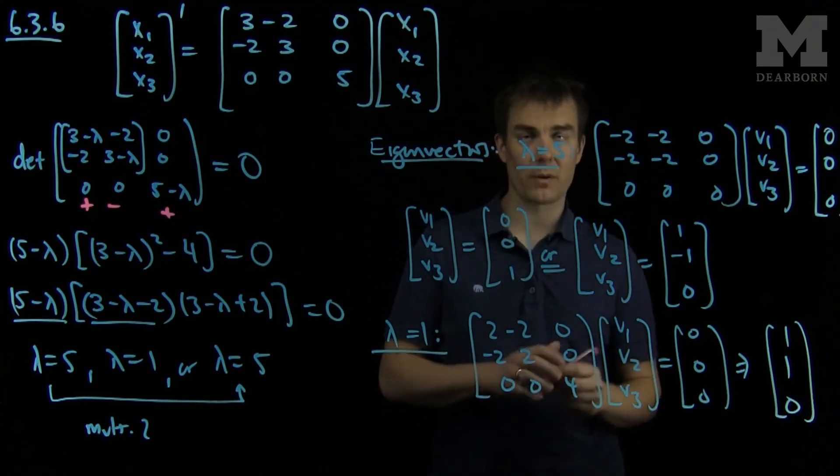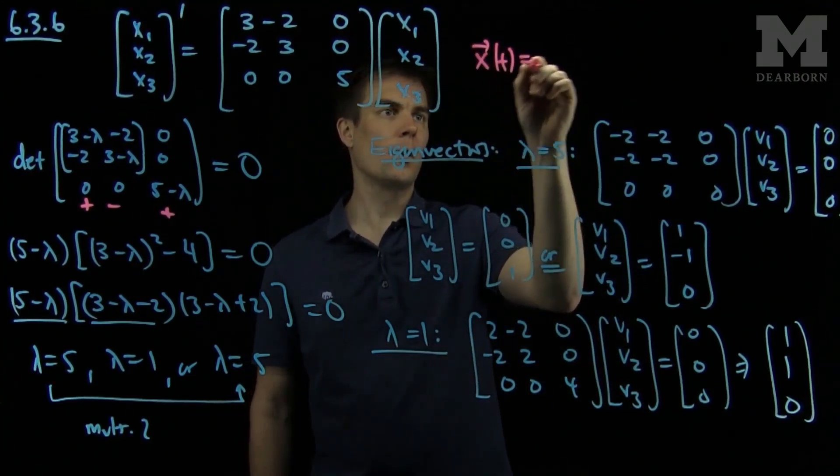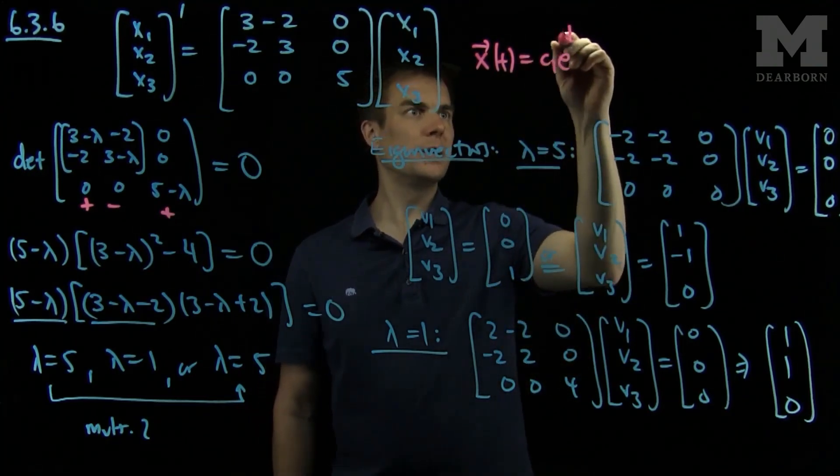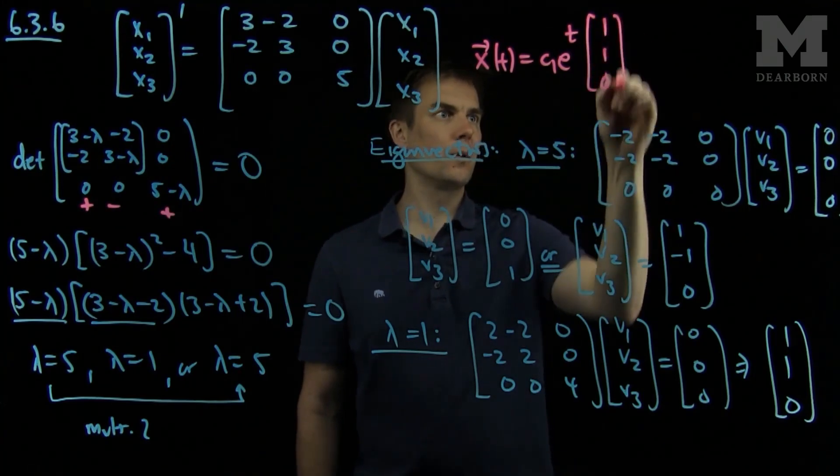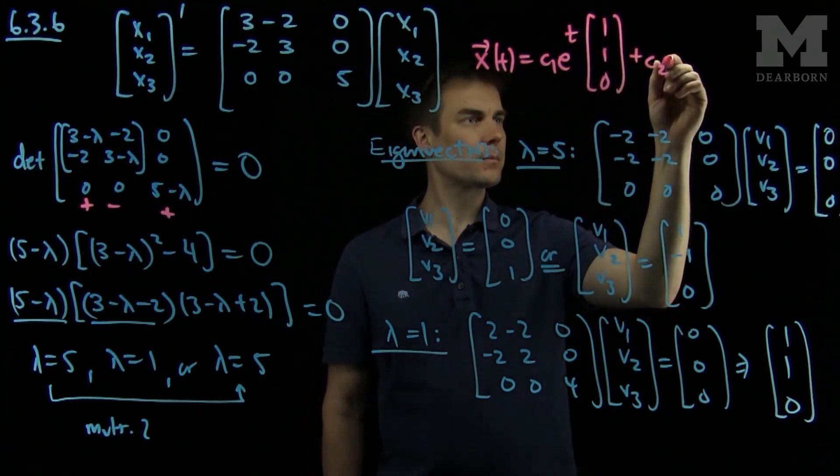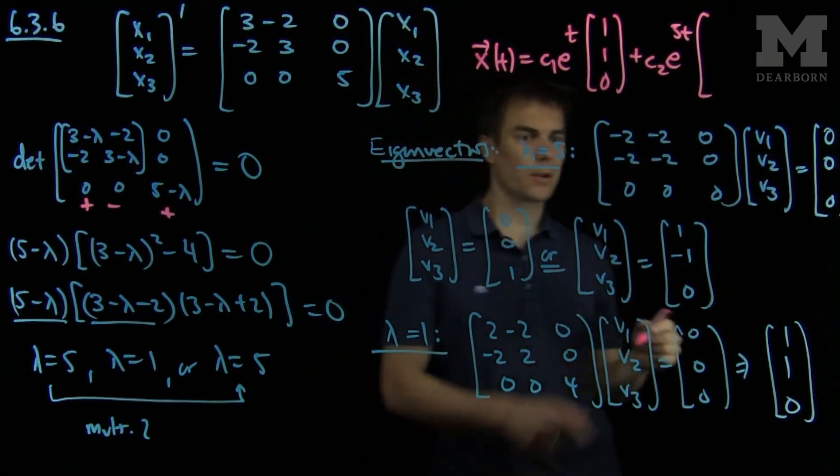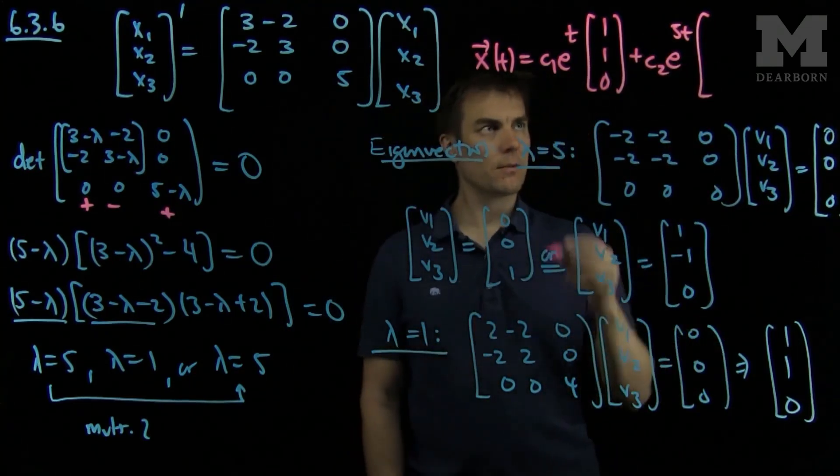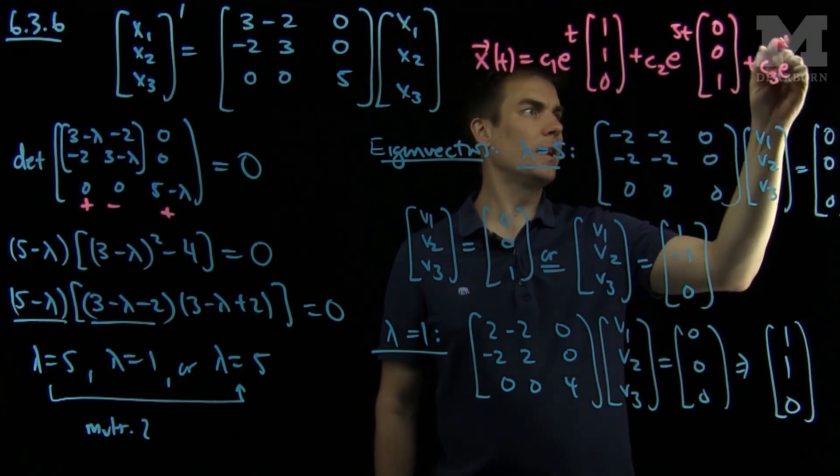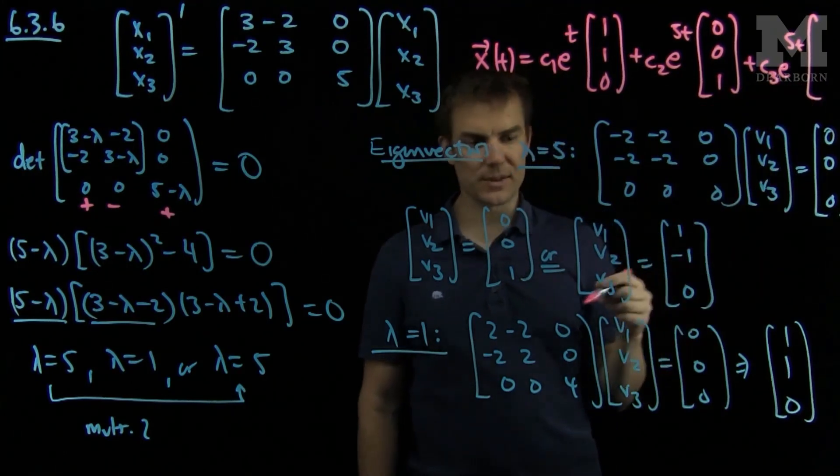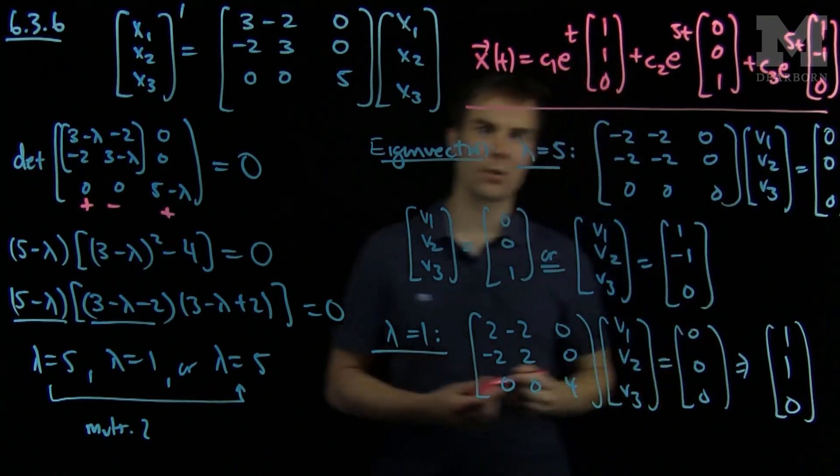So we can now write the solution of our problem. The solution, vector x(t), will be C1·e^t·[1, 1, 0] plus C2·e^(5t)·[0, 0, 1] plus C3·e^(5t)·[1, -1, 0]. And we have the solution to our problem.